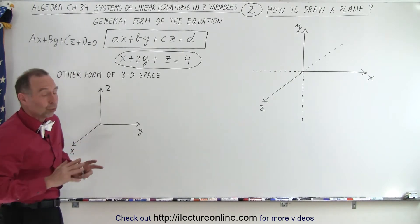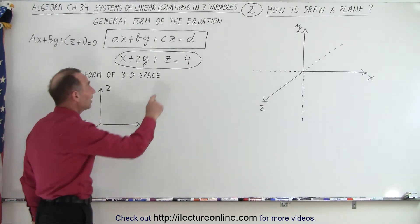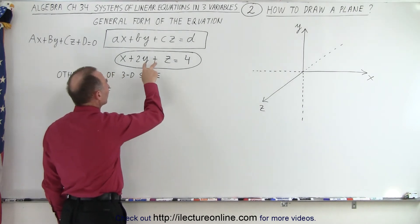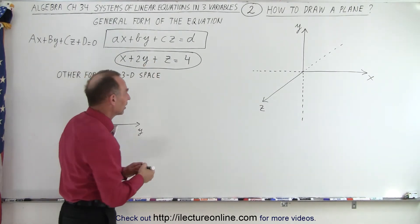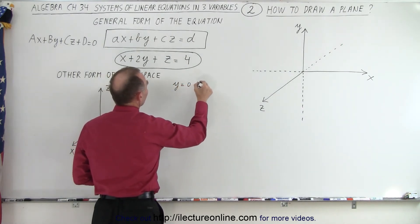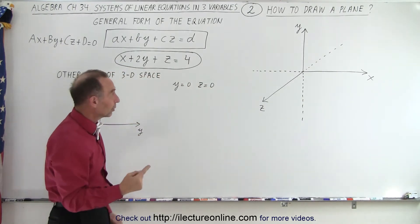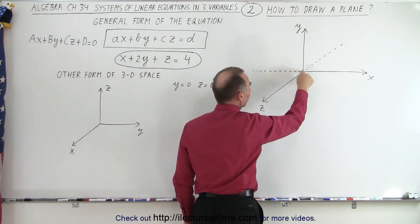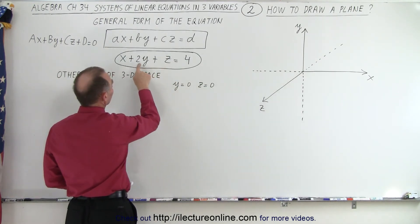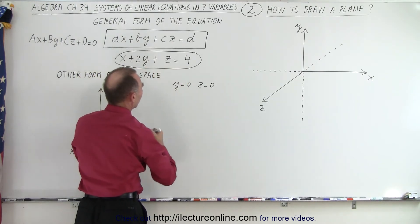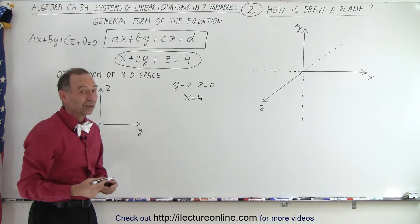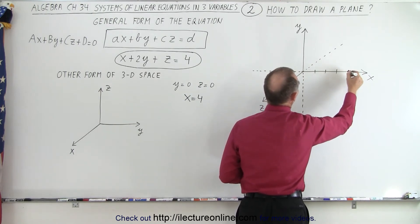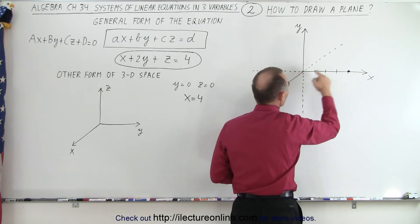So how do you take this equation and graph it in three-dimensional space? You alternately set two of the variables to zero to find where the third intercepts. Let's let y equals zero and z equals zero. Plugging those in, we get zero plus zero, and x equals four. So when y equals zero and z equals zero, x equals four — that's the point at x equals four on the axis, right there.